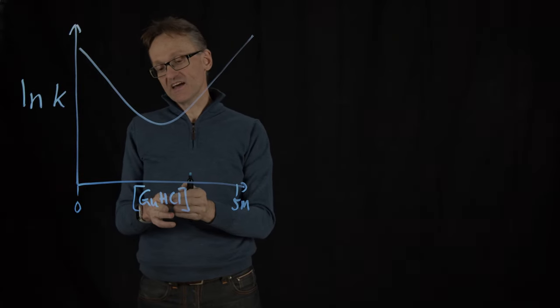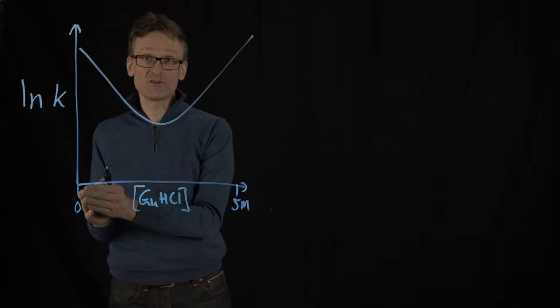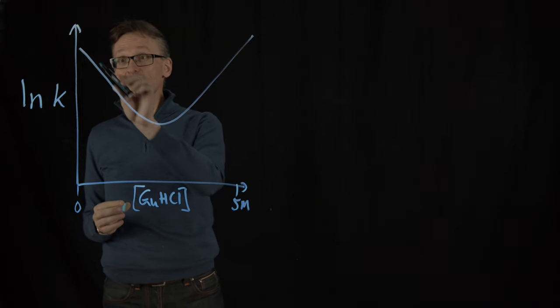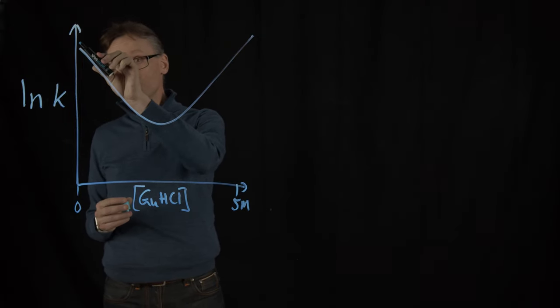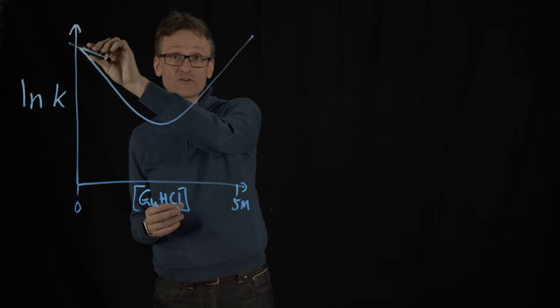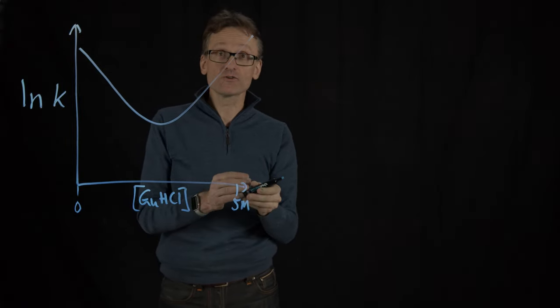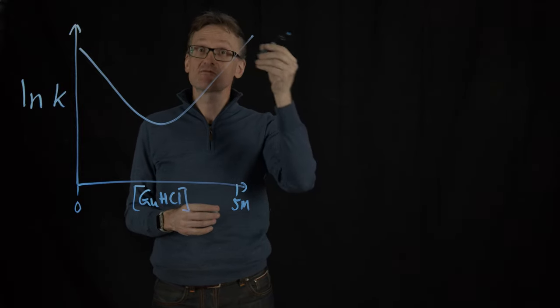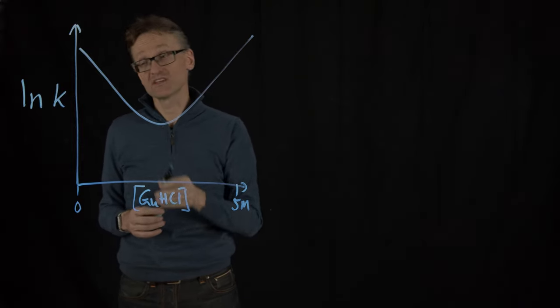What this means is that when I have zero concentration of guanidinium hydrochloride, I'm very rapidly going to go towards folding so I will rapidly reach equilibrium because all protein is folded almost. At very high concentration I will also have a rapid process because everything unfolds and that's going to be slowest in the middle.